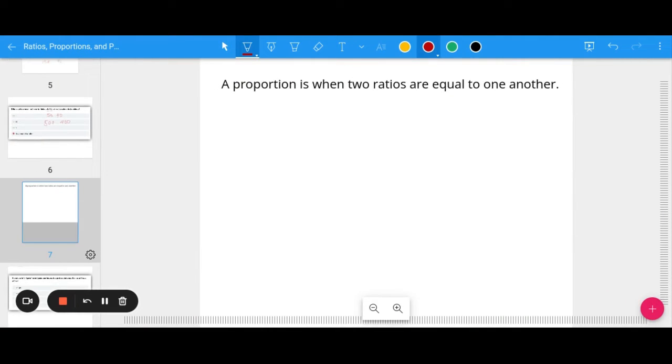A proportion is when two ratios are equal to one another. Oftentimes that can look like a fraction. For example, 2 thirds equals 8 twelfths. You might say that's also an equivalent fraction. I know this is equal because I can multiply the top and the bottom by 4. Ratios are also equivalent fractions because they need to be equal.